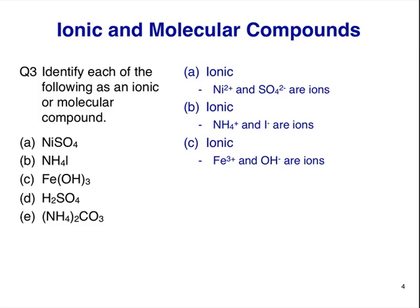Fe(OH)3 is another ionic compound made of an Fe3 plus ion, the ferric ion, and three individual OH minus, or hydroxide ions. The hydroxide ion is a common polyatomic anion.